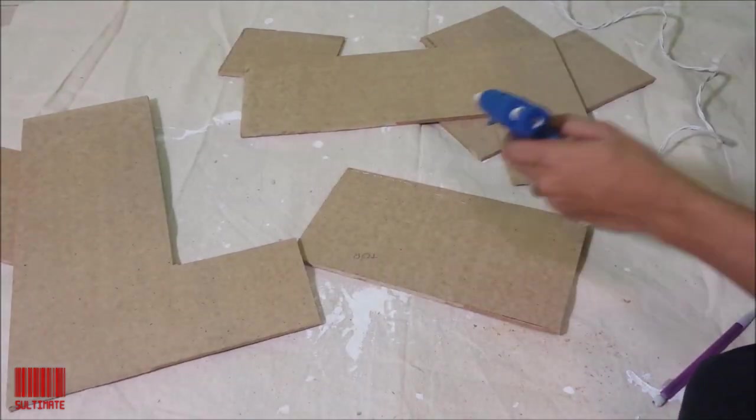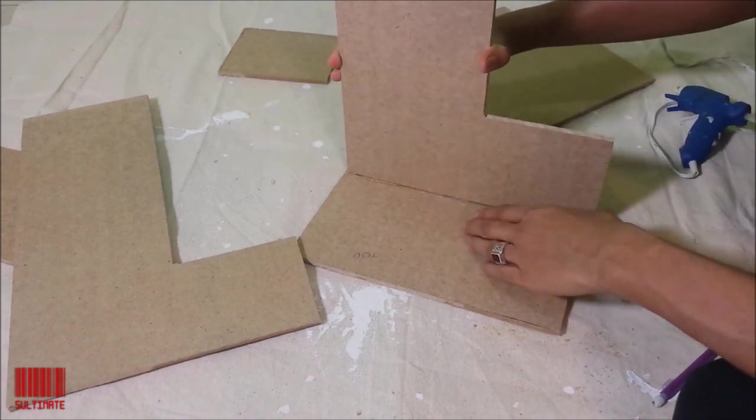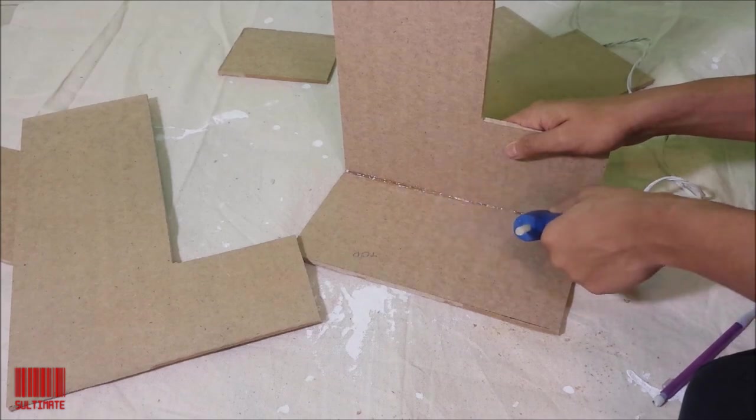I then took one side, the left side preferably, and I cut out a small notch towards the back end to house the extension cord. Afterwards, I used hot glue to secure the pieces together temporarily.